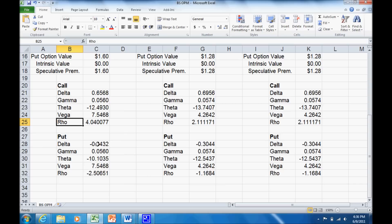Value of the put also is sensitive to those same factors. So we have a delta, gamma, theta, vega, and rho for the put as well.